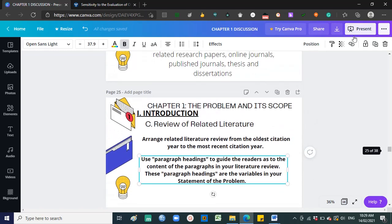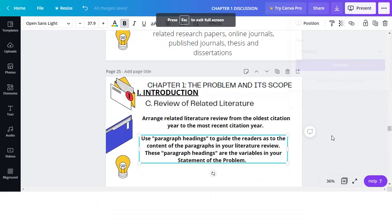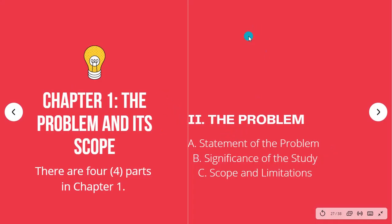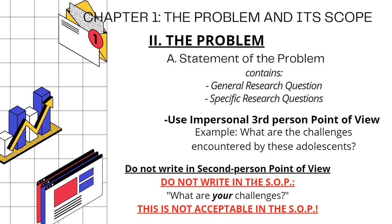Now for Chapter 1, Part 2 — The Problem — there are three sub-parts: Statement of the Problem, Significance of the Study, and Scope and Limitation. The Statement of the Problem contains the general research question and the specific research questions. Use impersonal third-person point of view — for example, 'What are the challenges encountered by these adolescents?' Do not write in second-person, such as 'What are your challenges?' — that is not acceptable.